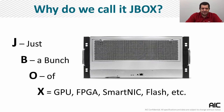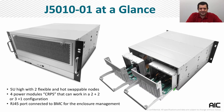Why do we call it a JBOX? Everything has to do with the flexible design. The system can be configured as just a bunch of GPUs or FPGA cards, and even smart network cards or flash storage. The JBOX is 5U high, with two flexible and hot-swappable nodes. Right under the nodes, there are four CRPS power modules. They can work in a 2+2 or 3+1 configuration. There is also a J45 port connected to the BMC for enclosure management.